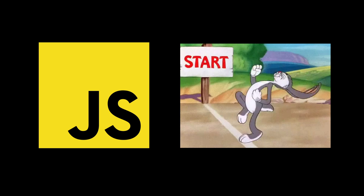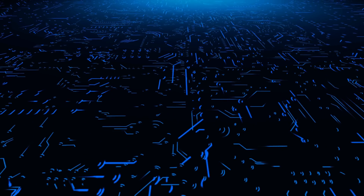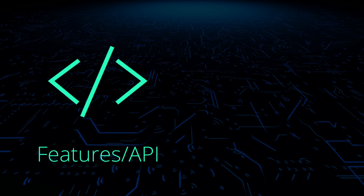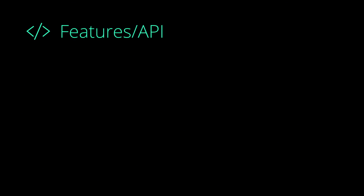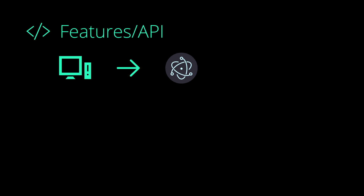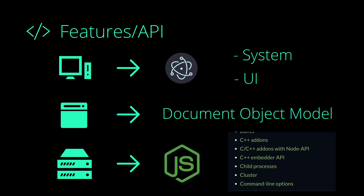So what the hell is a JavaScript runtime anyways? Well, it is essentially the environment where our JavaScript code runs. It has two main components: features or API, and engine. The features are heavily dependent on the environment. For example, a desktop runtime such as Electron needs access to system and UI components. A web browser runtime requires DOM API for manipulating page components. Or a server-side runtime like Node.js with lots of server-side required features.